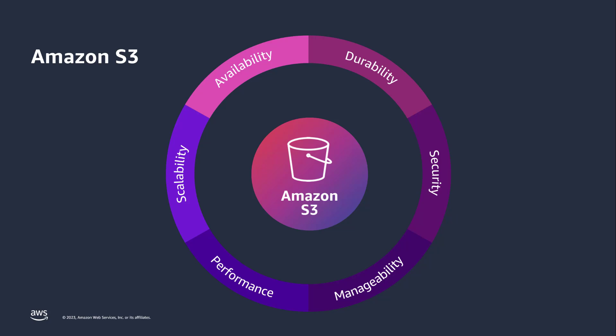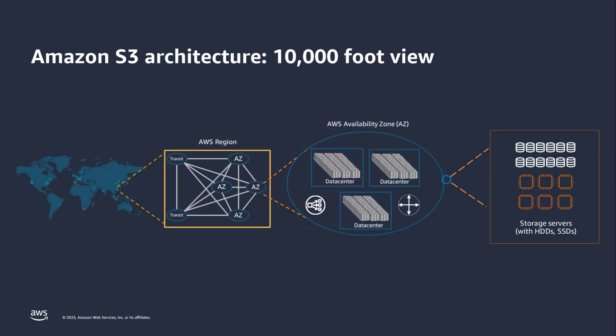Today, millions of AWS customers store exabytes of data in over 280 trillion objects. S3 is highly resilient and durable by default — this refers to the ability to retain your data without fear of data loss. S3 offers 11 nines of durability by redundantly storing your objects on multiple devices across a minimum of three availability zones in an AWS region.